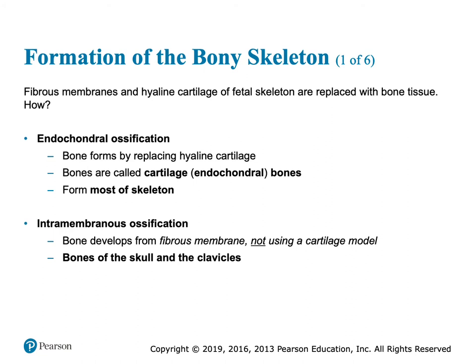The less common type applies to the bones of the skull and the clavicles. The flat bones of the skull go through intramembranous ossification. The difference is there is no cartilage model — mesenchyme is going to directly become bone. We don't have the hyaline cartilage model; mesenchyme goes straight to bone for intramembranous ossification.